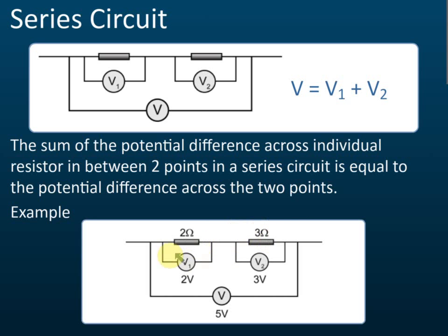For example, with a 2 ohm and a 3 ohm resistor, if the potential difference across one is 2 volts and the other is 3 volts, then the potential difference across both resistors together is 2 plus 3, equal to 5 volts. For a series circuit, V equals V1 plus V2.